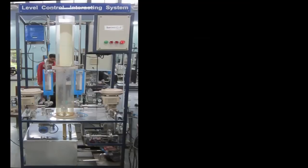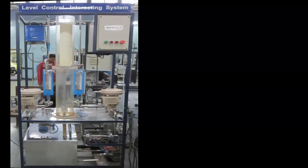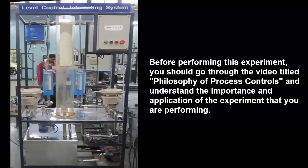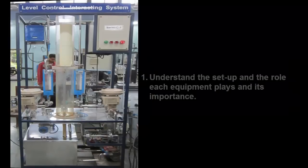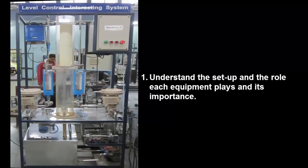Let us now talk about the procedure to be followed when performing this experiment. Before performing this experiment you should go through the video titled Philosophy of Process Controls and understand the importance and application of the experiment that you are performing. Now go ahead and understand the setup and the role each equipment plays and its importance. It is very crucial to realize how each equipment functions and the effects they have on the outcome of the experiment. You may be asked to explain the same by the faculty or the TAs.